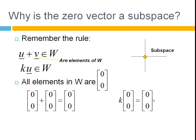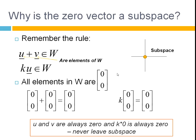Multiply by any number and then you're still in the subspace. You can only add the vectors that are in the zero vector and the only vector that's in the zero vector is the zero vector. So, U and V are always zero and zero at zero is always zero and K times zero is always zero. So, you never leave the subspace.